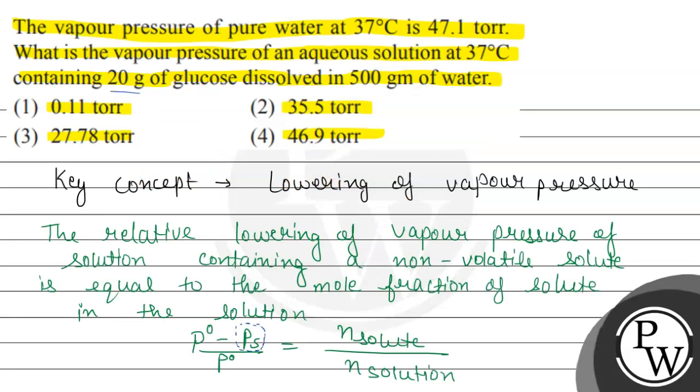Looking at the options given, we can see that option 4 is the correct match at 46.9 torr. Options 1, 2, and 3 are incorrect. Hope you understood it well. Best of luck.